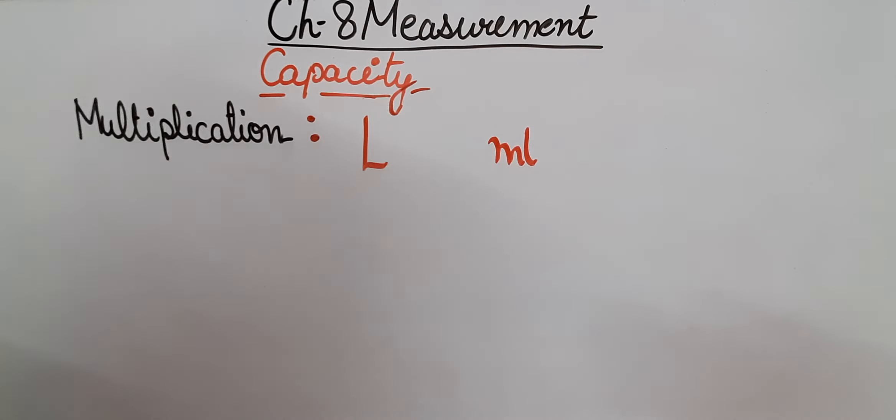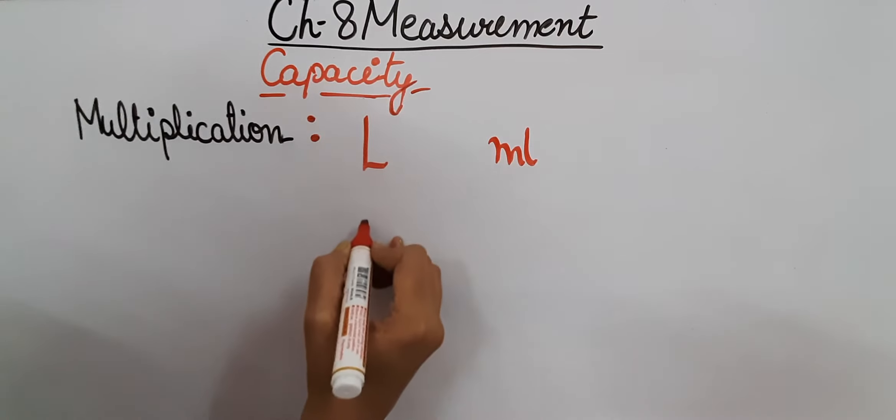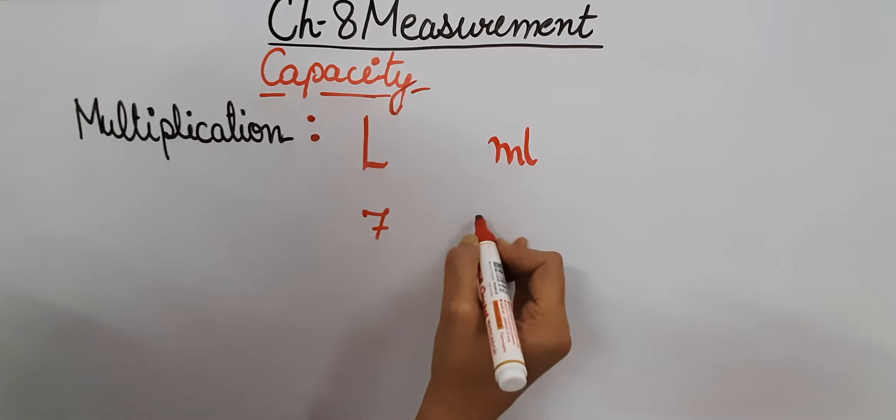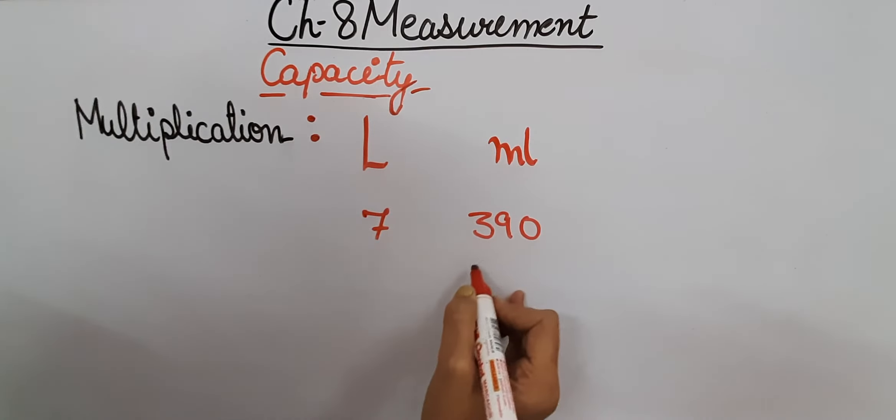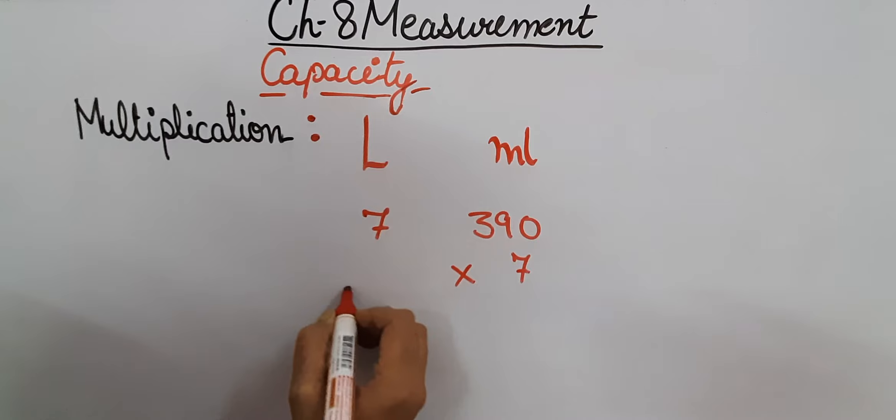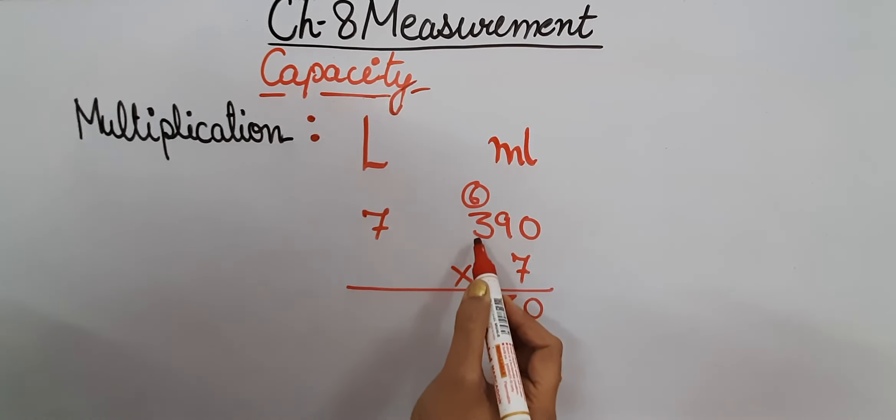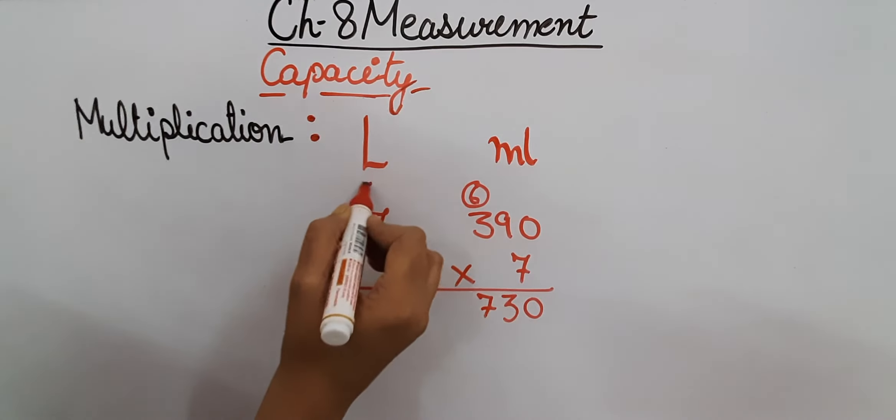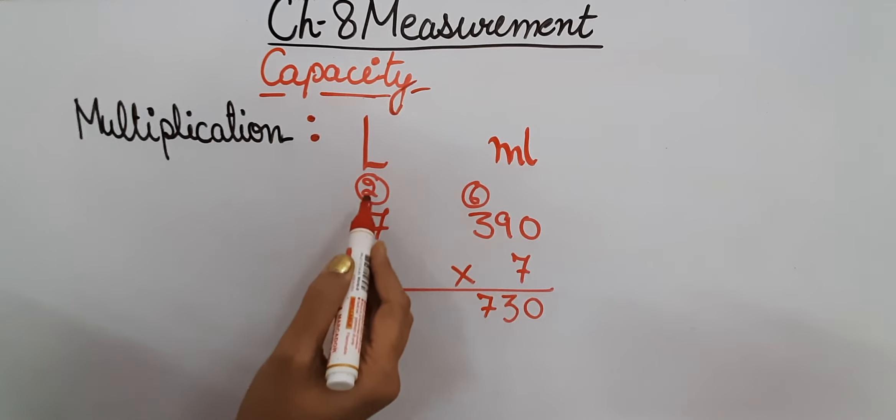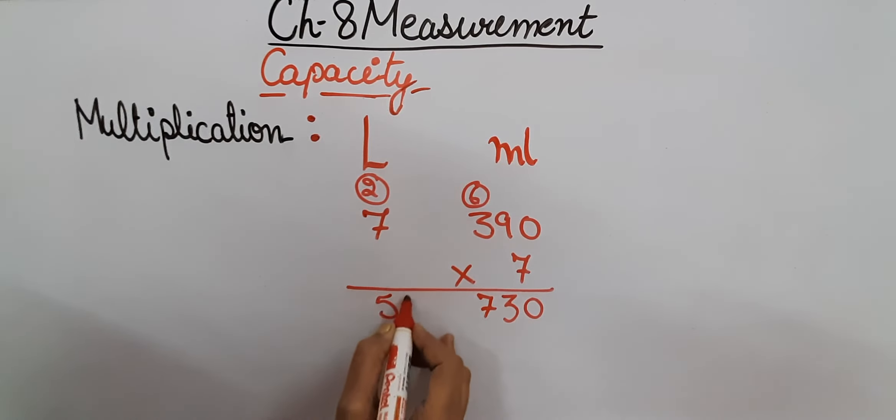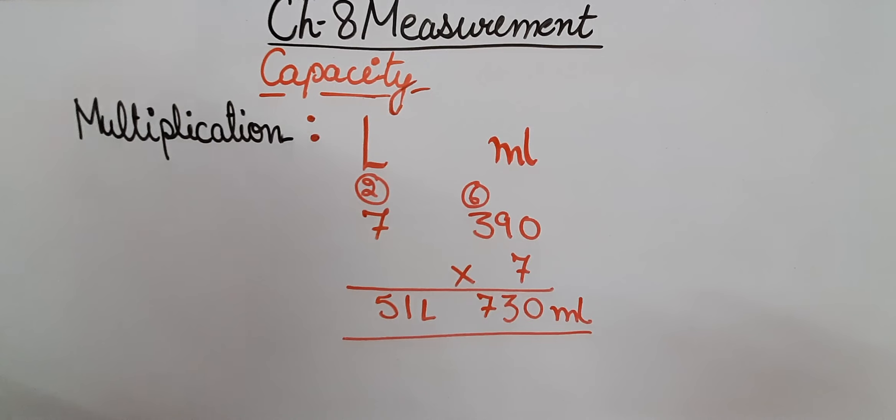In multiplication as well, we will write them according to the units. For example, 7 liters 390 milliliters multiplied by 7. Let's multiply it. 7 zeros are 0, 7 nines are 63, so 6 we are going to carry it here. 3. 7 threes are 21, 21 plus 6 will be 27. 7 sevens are 49, 50, 51. So it will be 51 liters 730 milliliters. That is our answer.